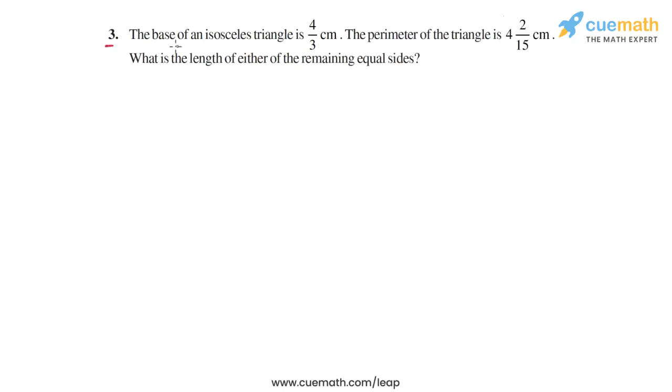Question 3 of the exercise says that the base of an isosceles triangle is 4 by 3 centimeters. An isosceles triangle is any triangle in which two sides are equal. So the base is basically the third side.